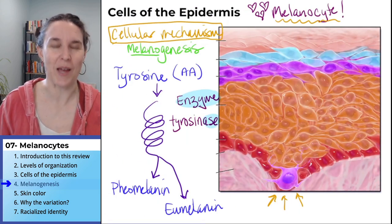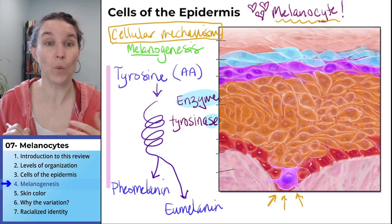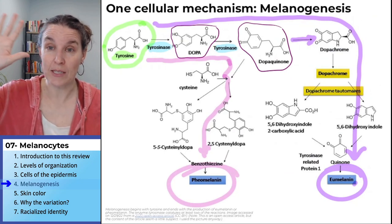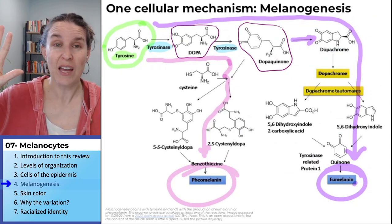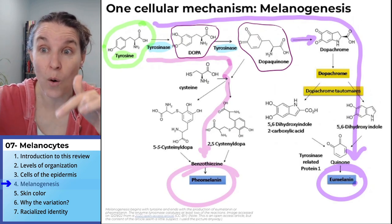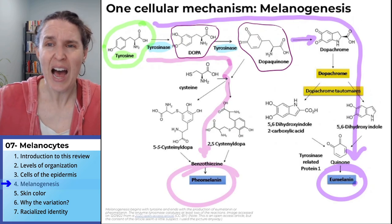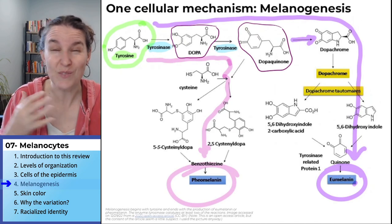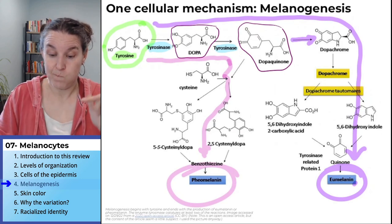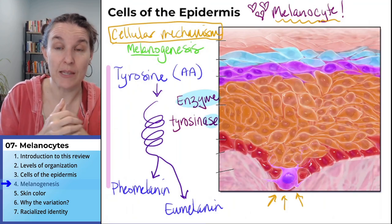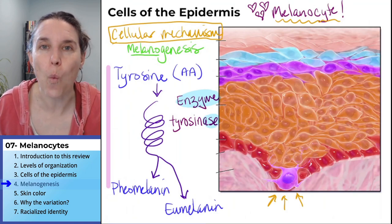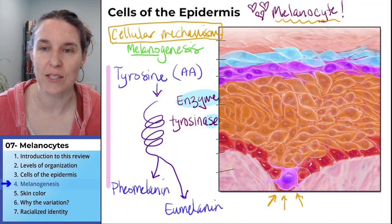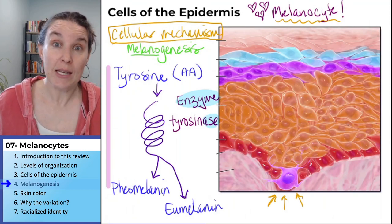The simplified diagram says the same thing and gets us to the final outcome: producing either pheomelanin or eumelanin. I prefer knowing how something happens — it's really interesting and cool — but I don't need to memorize all the stages and parts. The outcome is these two different kinds of melanin. Now, why do we need melanin and what is it going to do? It has lots of functions, and in particular it is what causes your skin color — so we'll look at that next.